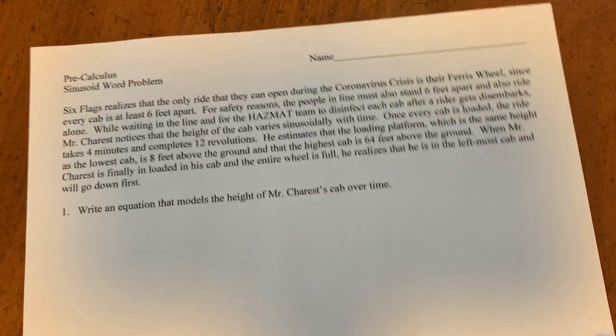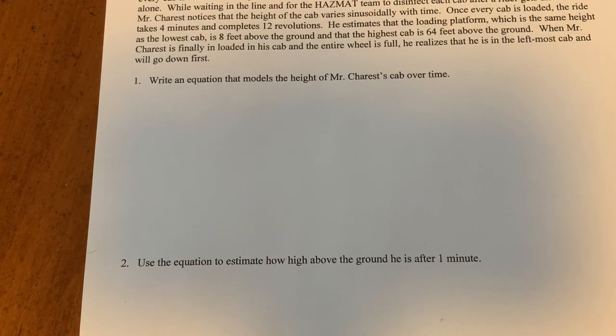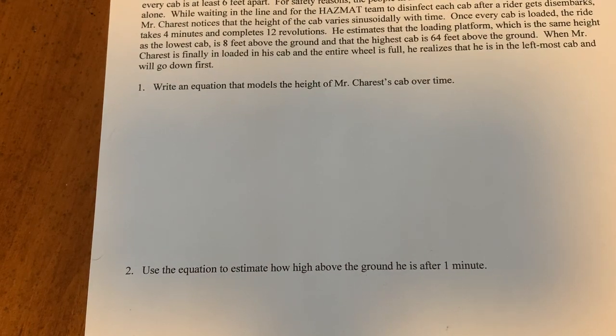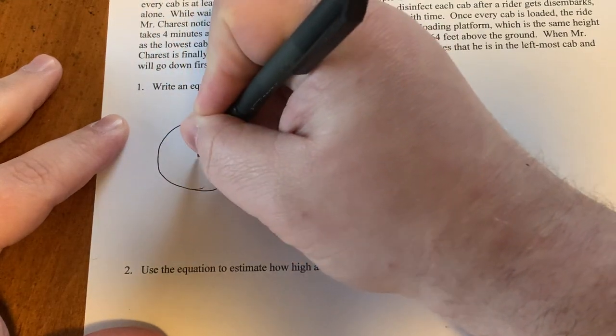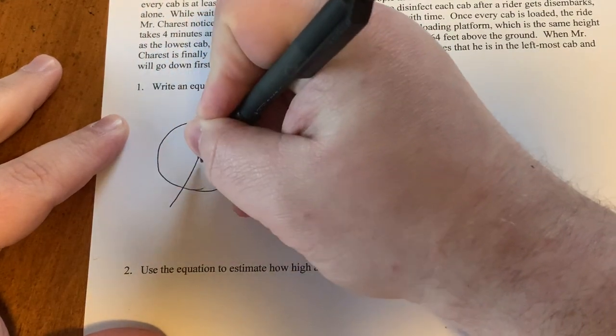So we want to write an equation that models this. So I always find with word problems, it's best to sketch a diagram. So I'm gonna actually sketch a Ferris wheel. Not a great diagram of it, but whatever.